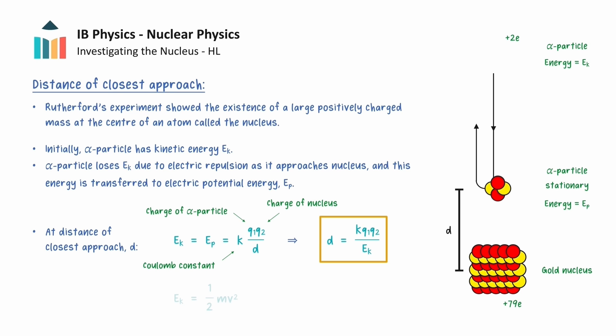Furthermore, if we substitute the formula for kinetic energy from the data booklet, we can get a second version for the distance of closest approach which includes the alpha particle's mass m and its initial speed v.